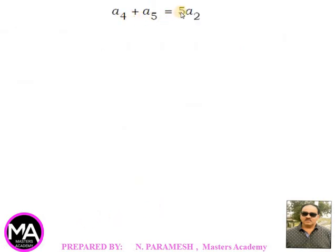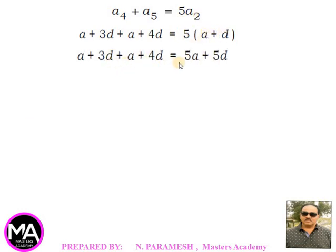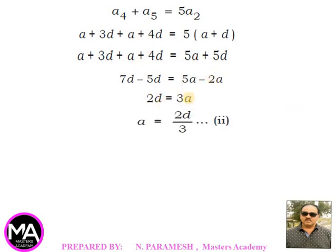Second condition: a4 + a5 = 5a2. So (a+3d) + (a+4d) = 5(a+d). Simplifying: 2a + 7d = 5a + 5d, giving 2d = 3a, therefore a = 2d/3 — call this equation 2.